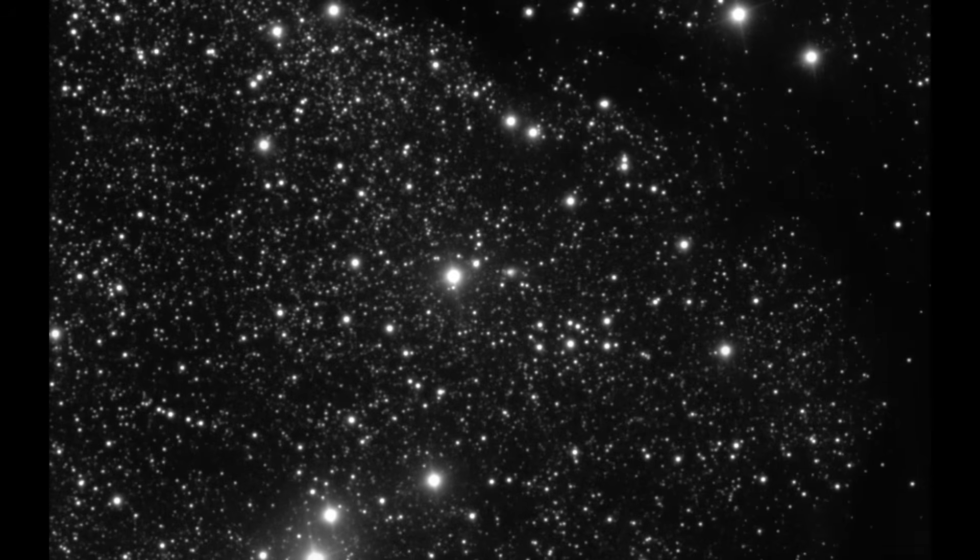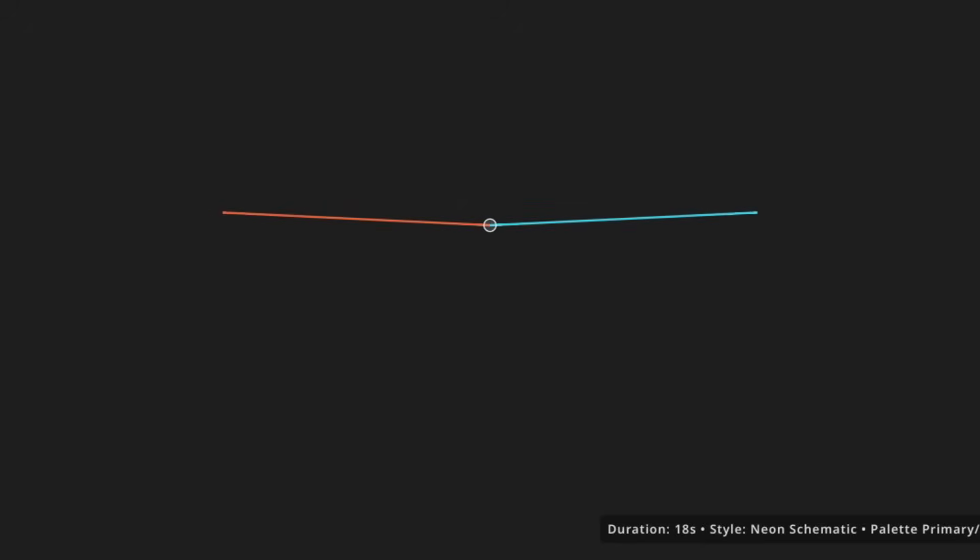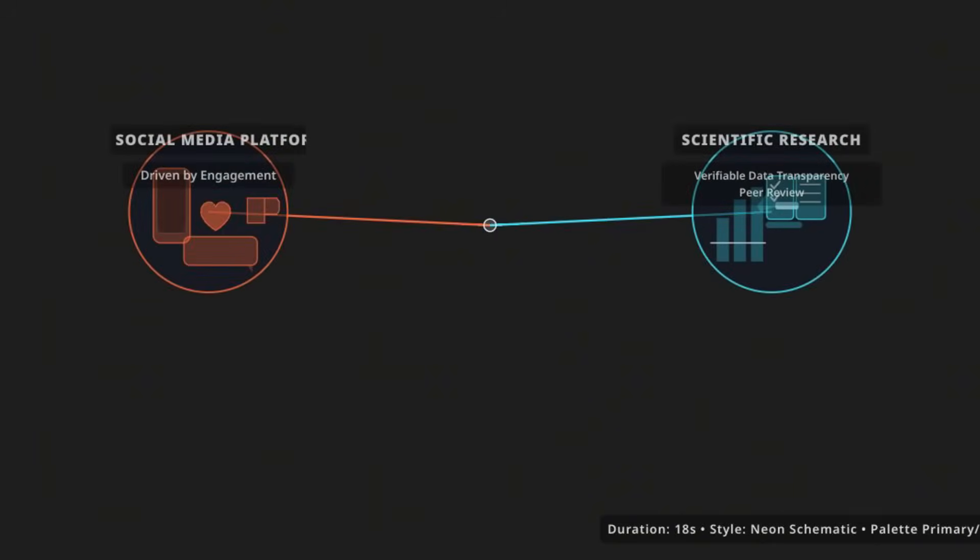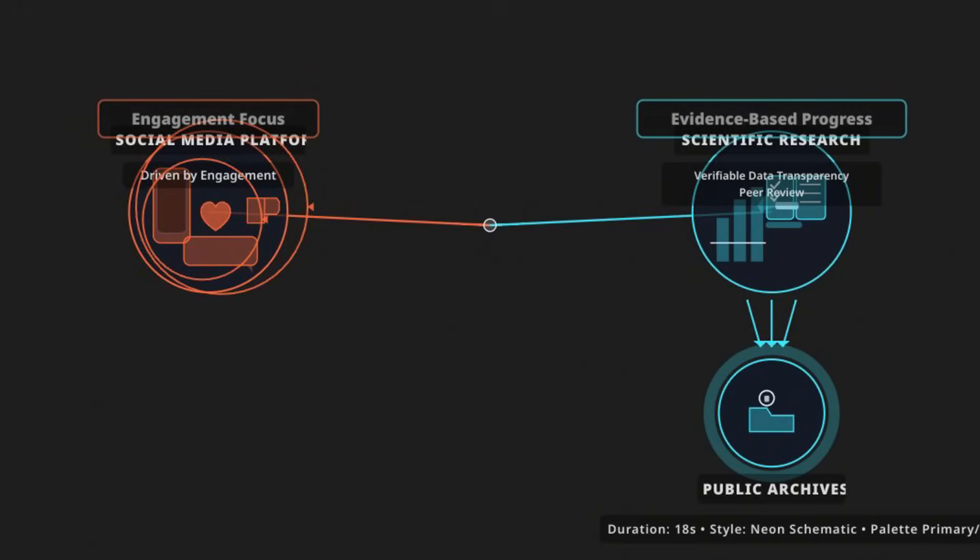The 3I Atlas case also highlights a modern reality. Misinformation can spread faster than verification. Social media platforms prioritize engagement. Science, however, relies on verifiable data, transparency, and peer review. Scientific progress is based on publicly available data, and real findings are always published in public archives for anyone to scrutinize.